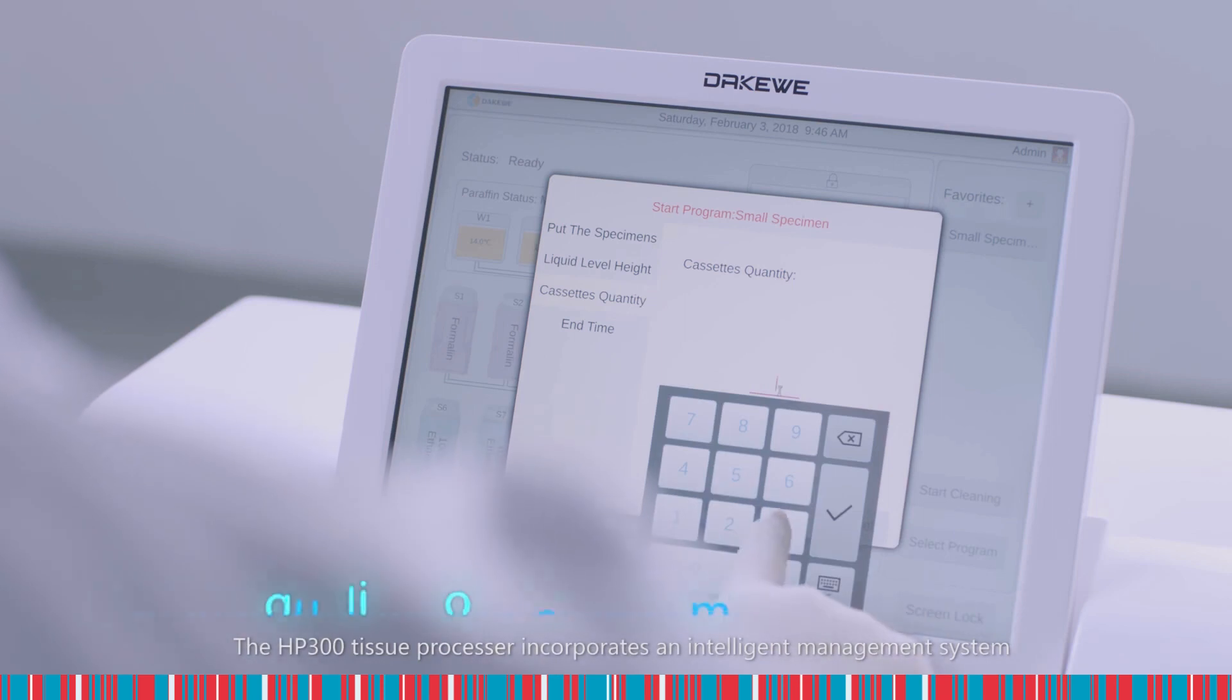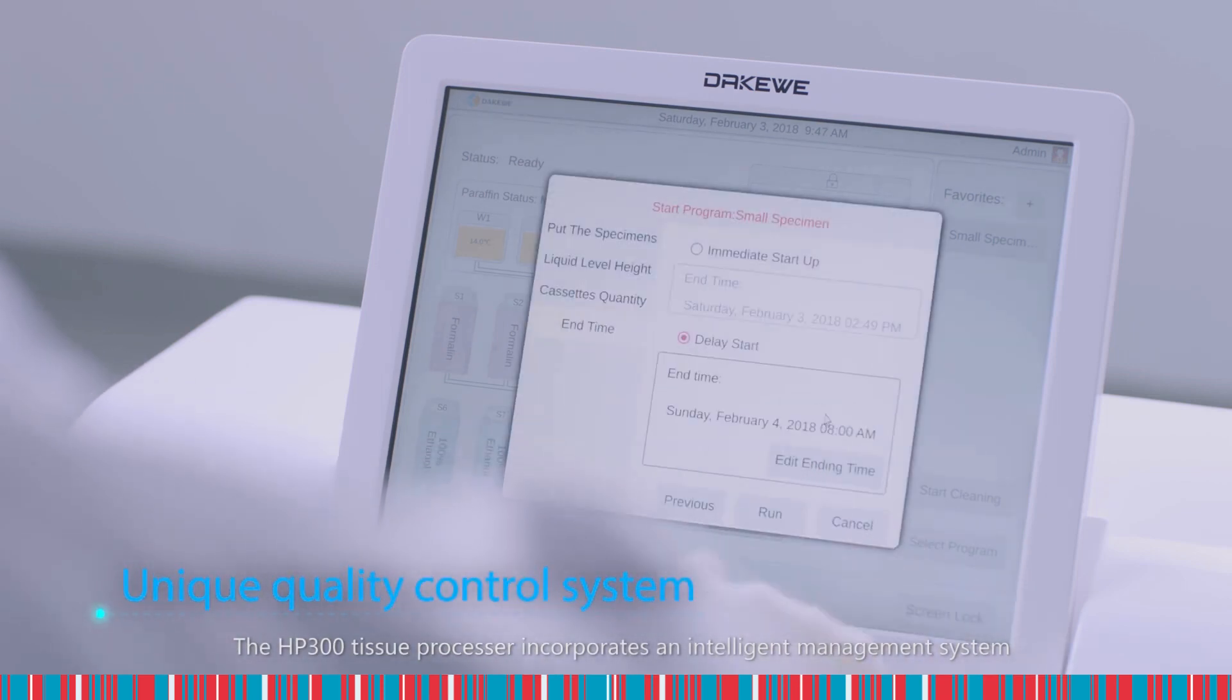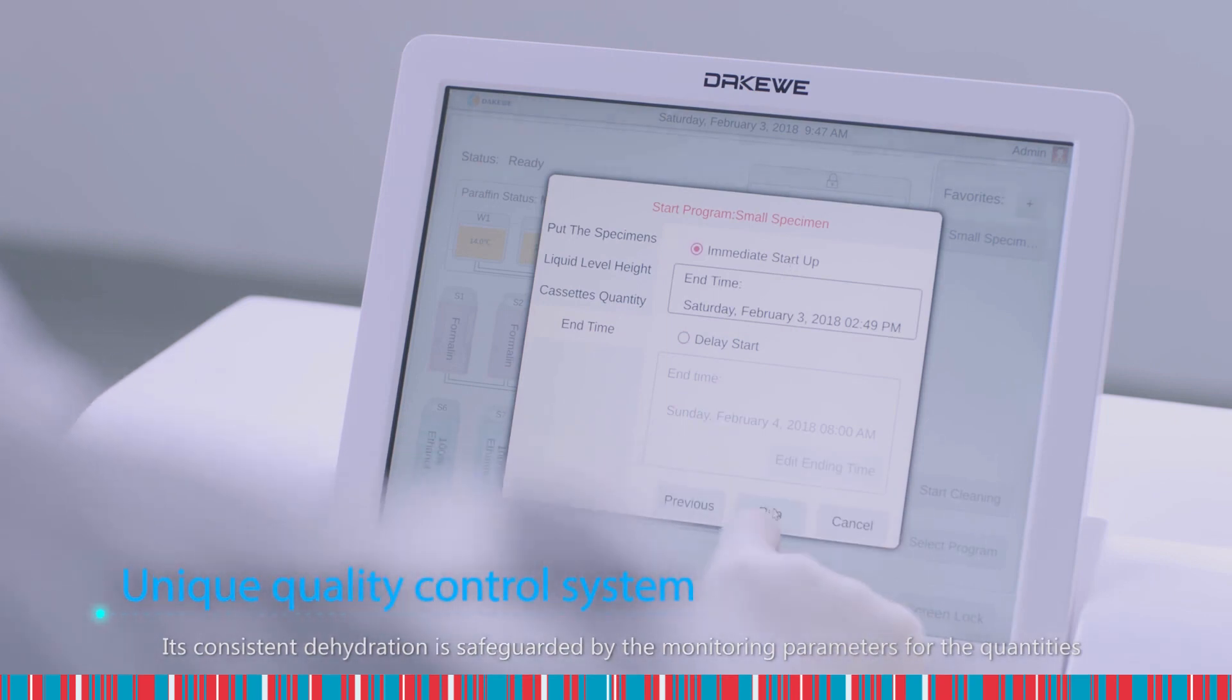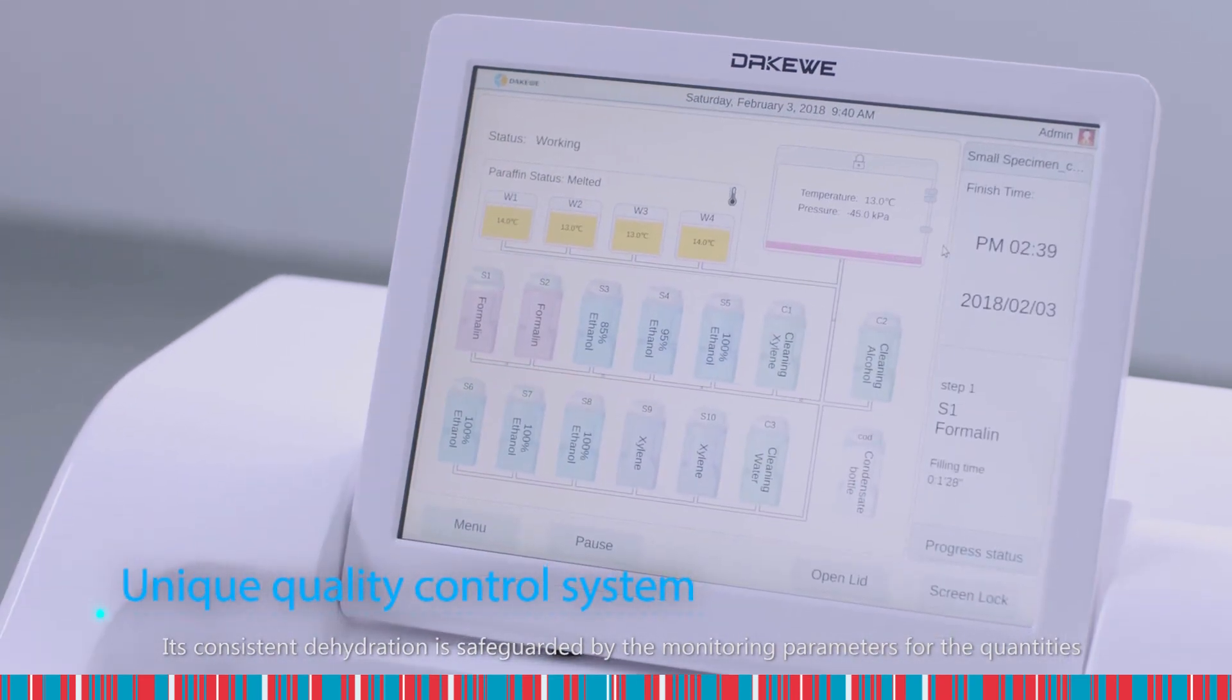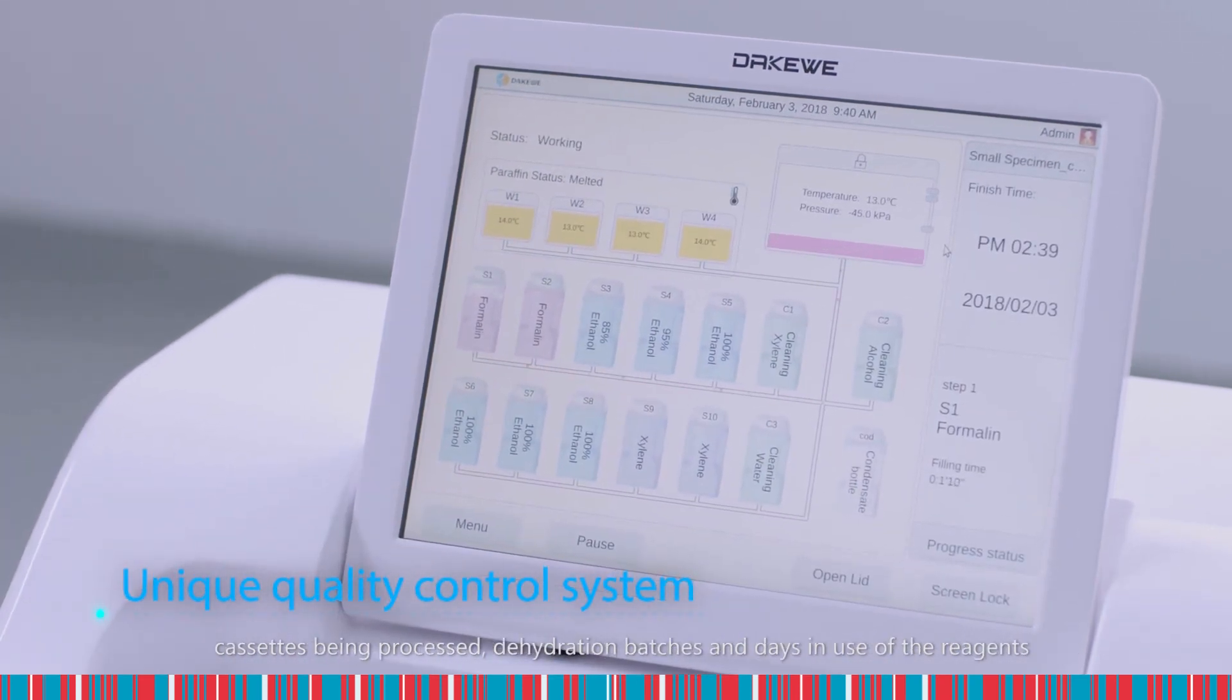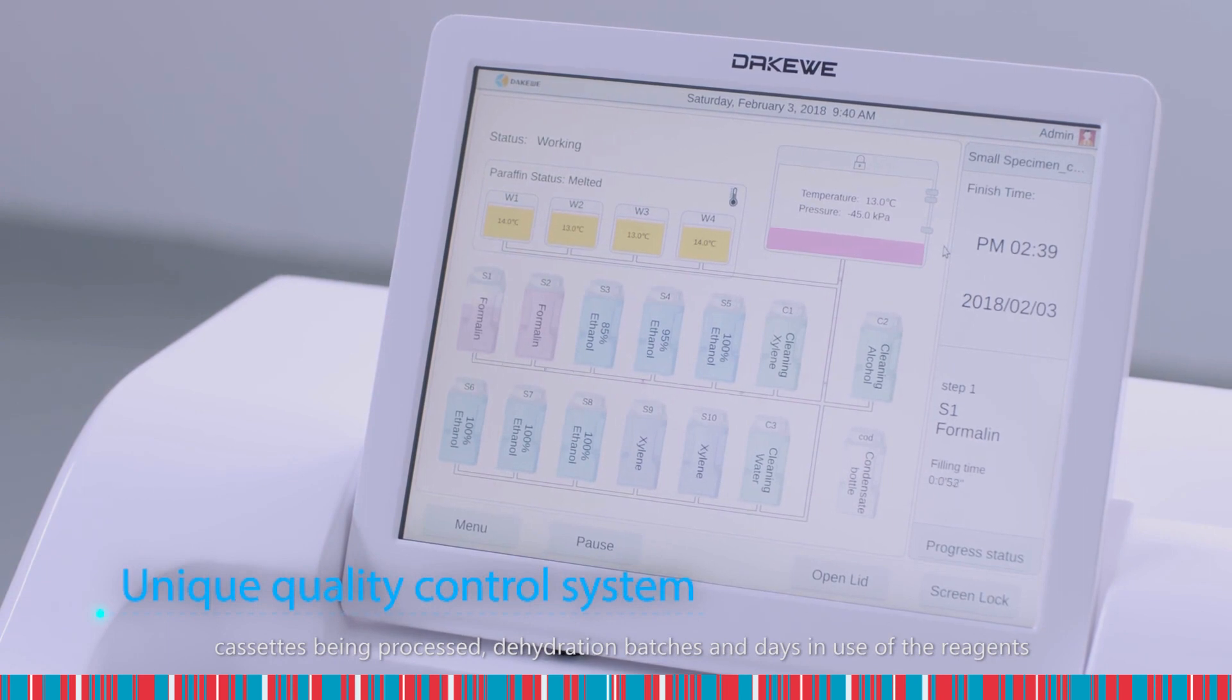The HP300 Tissue Processor incorporates an intelligent management system. Its consistent dehydration is safeguarded by the monitoring parameters for the qualities, cassettes being processed, dehydration batches and days in use of the reagents.